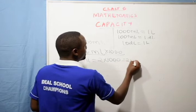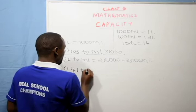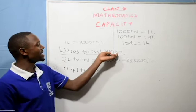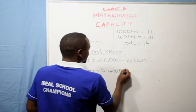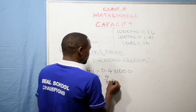Another example: convert 0.4 liters to milliliters. When converting liters to milliliters, we multiply by 1,000. So this is 0.4 times 1,000. We convert the decimal to a fraction: 0.4 is the same as 4 over 10. So it is 4 over 10 times 1,000, which is 400 milliliters.